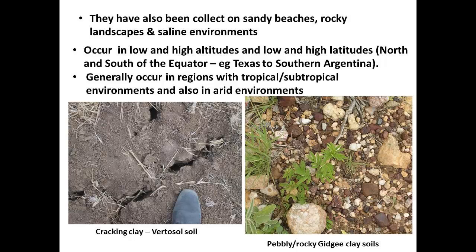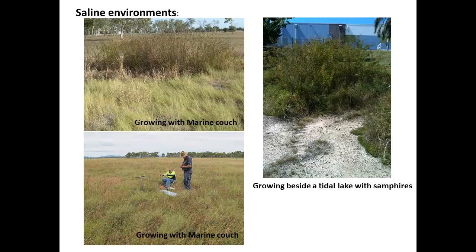The images on the bottom show some examples of the sort of environments they thrive in, like the cracking clay on the bottom left and a pebbly rocky Gidgee clay soil. There are also images showing how they can grow in saline environments — the two on the left show Desmanthus growing with marine couch, the top one in Townsville and the bottom one near Bowen, and on the right there are some Desmanthus plants growing right on the side of a tidal lake.